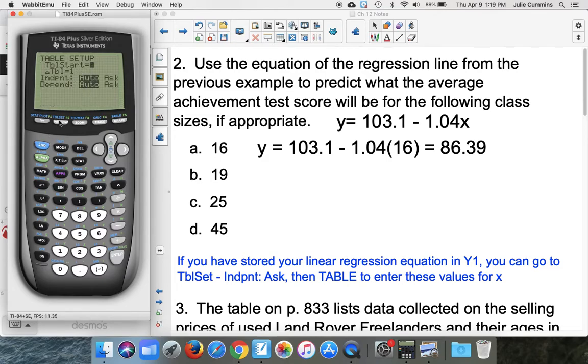A better way to do this is go to table set, so second table set. And right now it's automatically picking the independent variables to use. If we switch it over to ask, that means I get to plug in which x values I want it to evaluate.